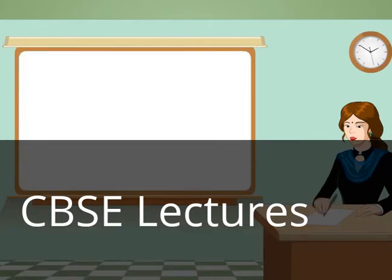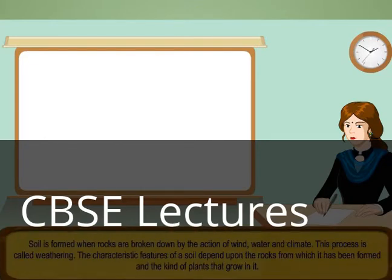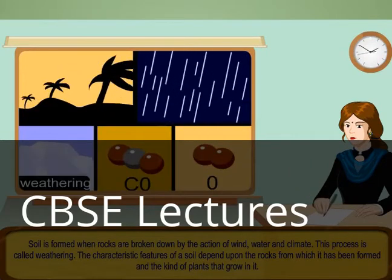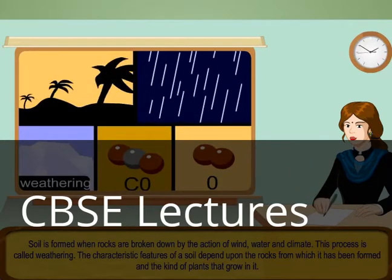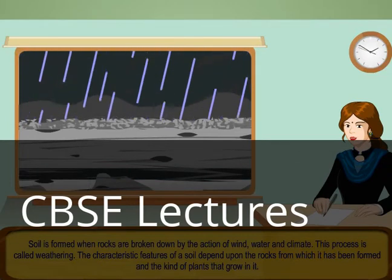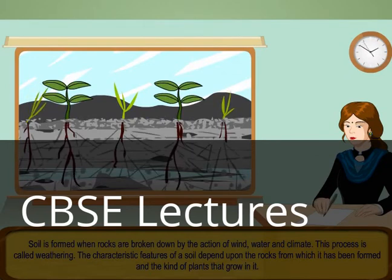Do you know how soil is formed? Soil is formed when rocks are broken down by the action of wind, water, and climate. This process is called weathering. The characteristic features of a soil depend upon the rocks from which it has been formed and the kind of plants that grow in it.